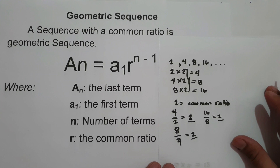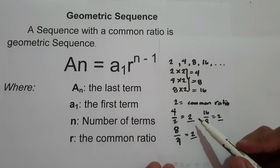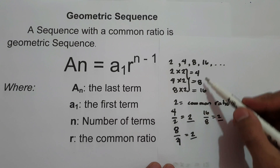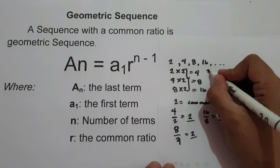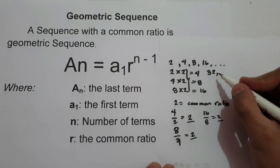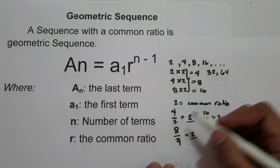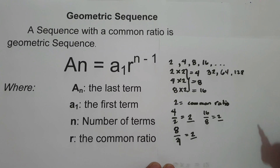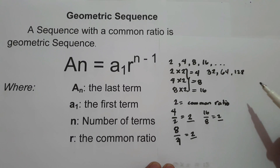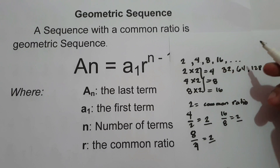But how do we find the next 3 terms? To find the next 3 terms, simply multiply the common ratio to the last term. So that is 16 times 2 is 32, then 32 times 2 is 64, and 64 times 2 is 128. So to find the next 3 terms, simply multiply the common ratio to the last term.